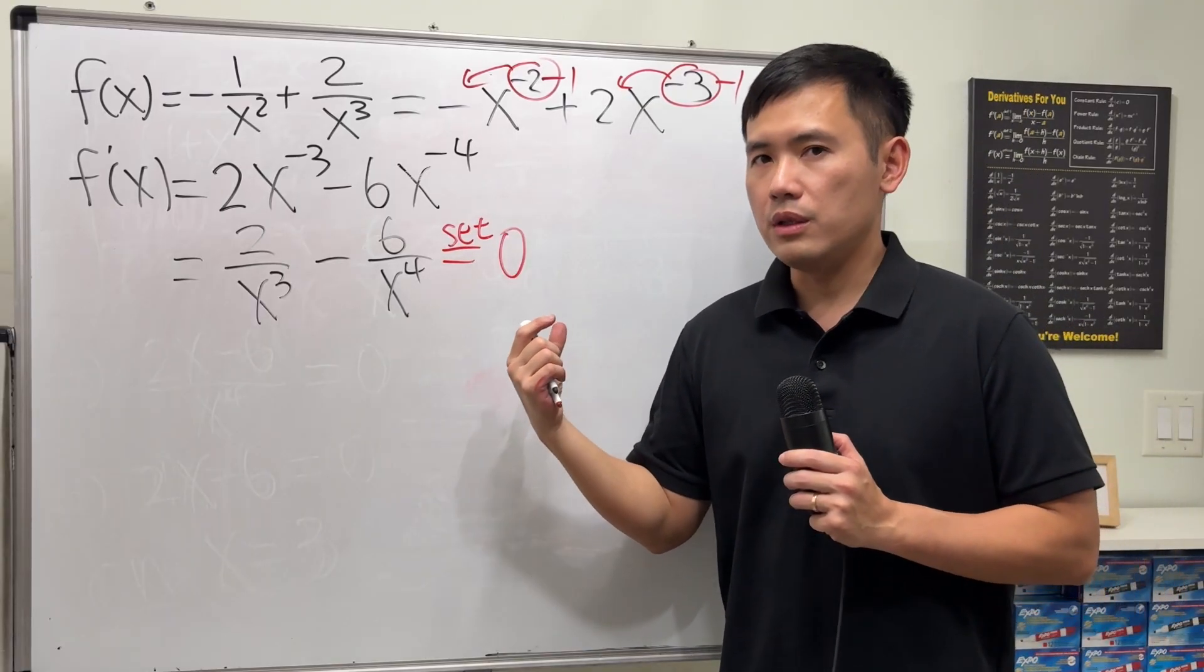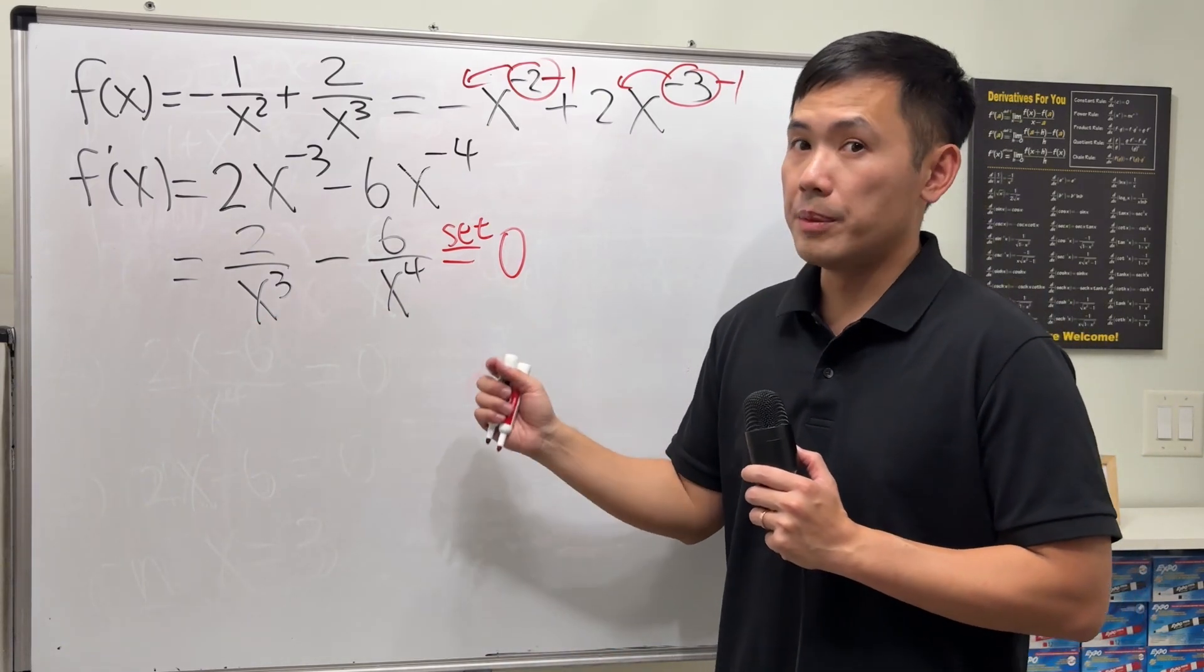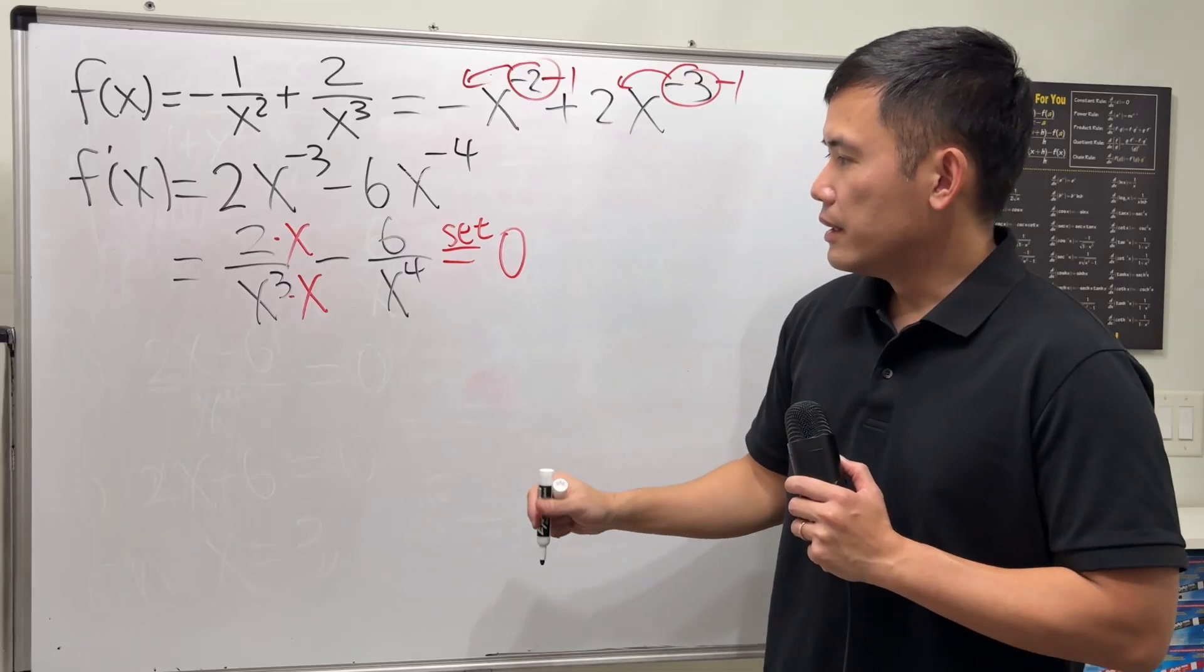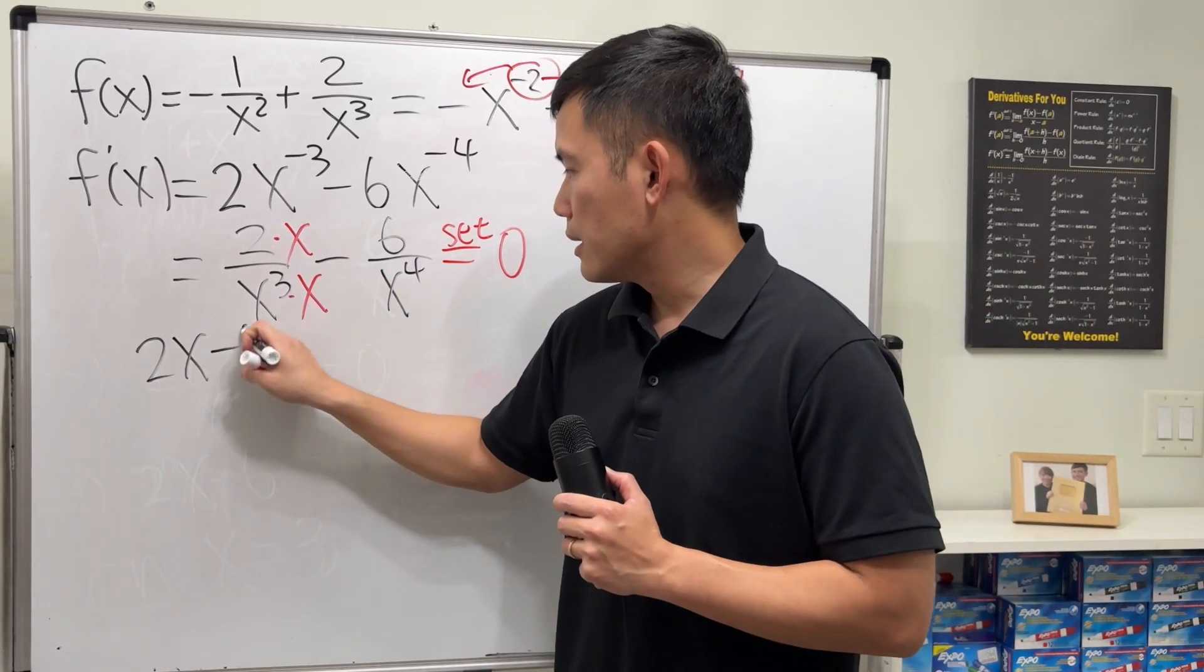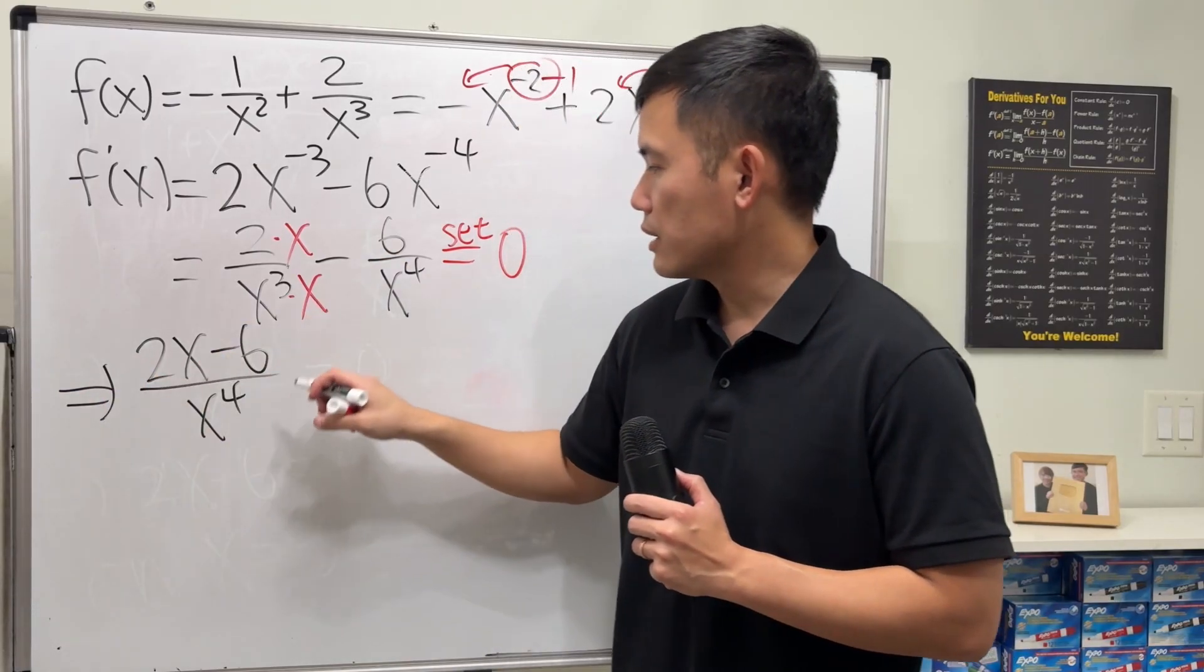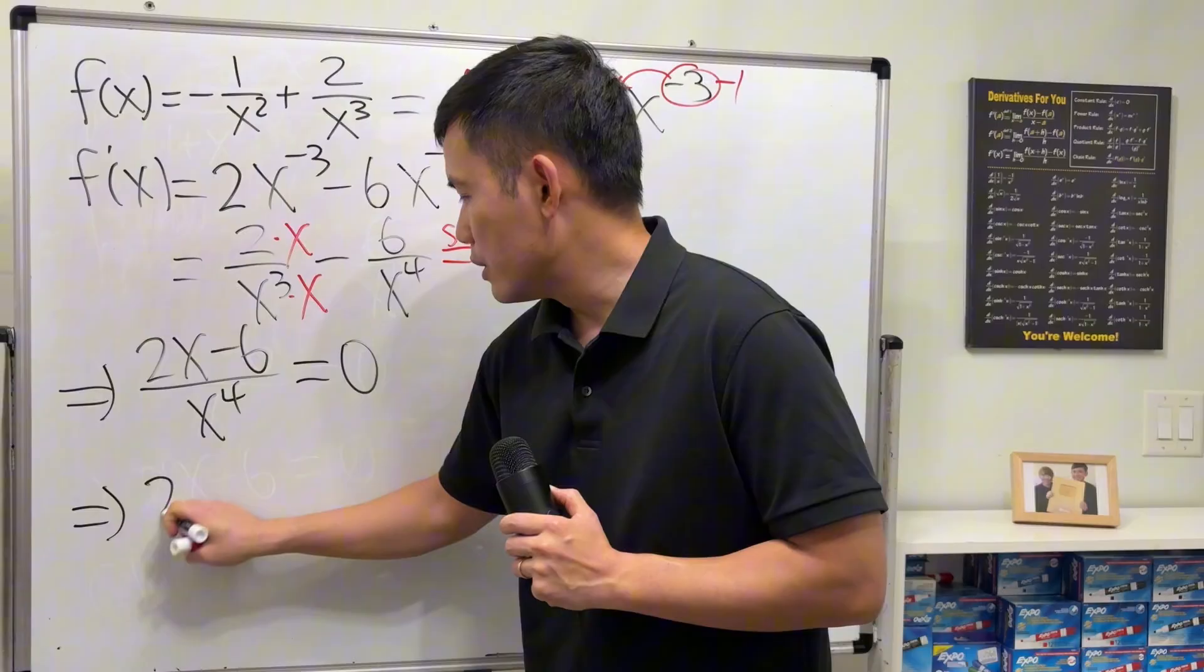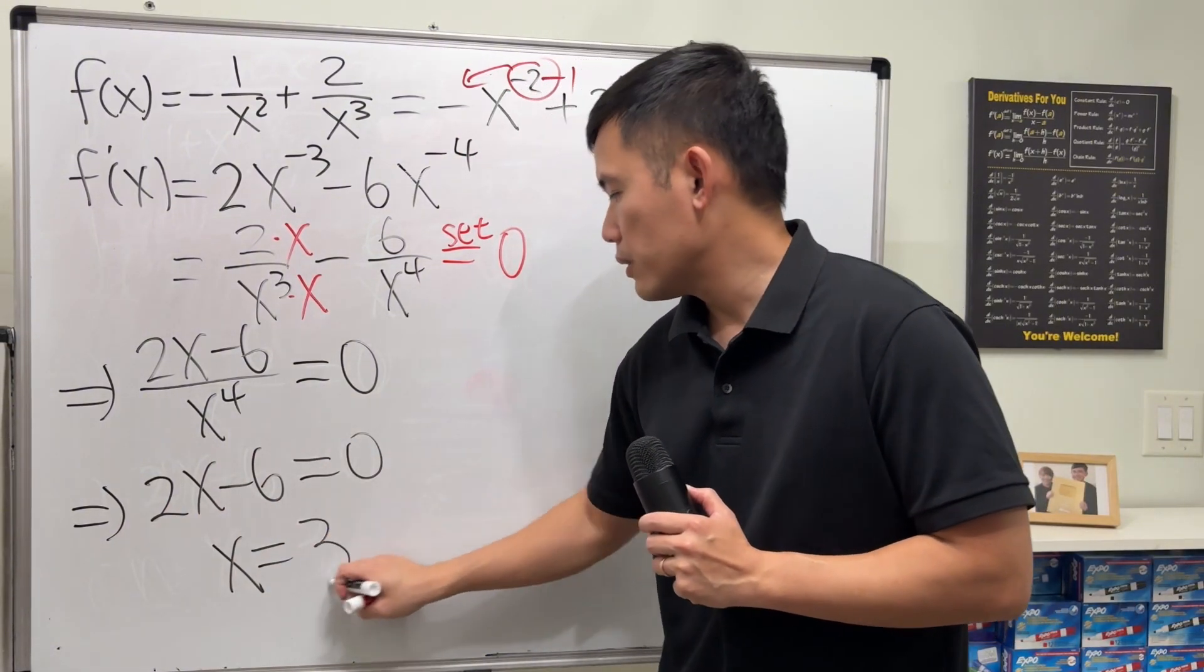And we are going to set this equal 0, so that we can see where the critical number is. Now, I'm going to combine them, and we need the common denominator. Here is x to the 4th power. This is only x to the 3rd power. So let me multiply this by x, and x here. Combine them, we are going to get 2x minus 6 over x to the 4th power. In order for this to be 0, we just need the top to be 0. So that means 2x minus 6 has to be 0. Therefore, x is equal to 3.